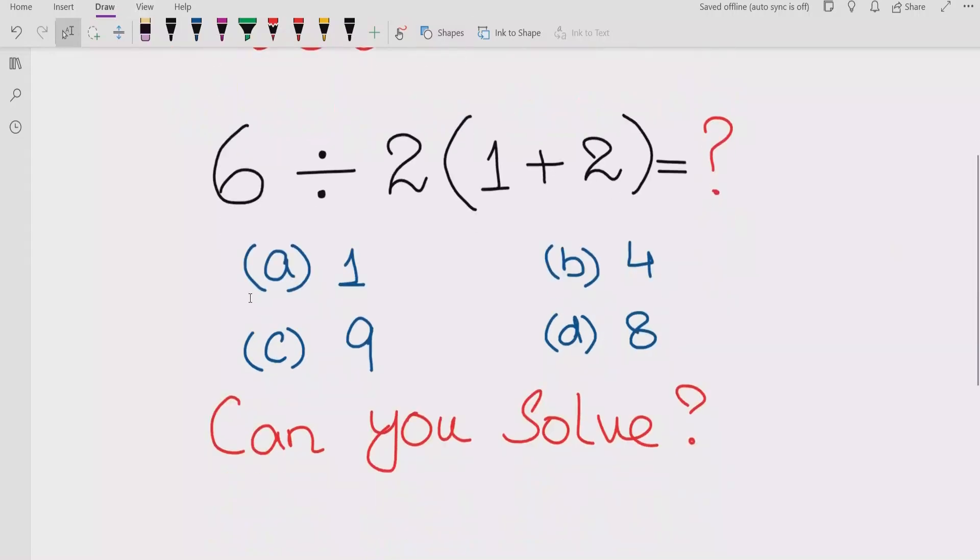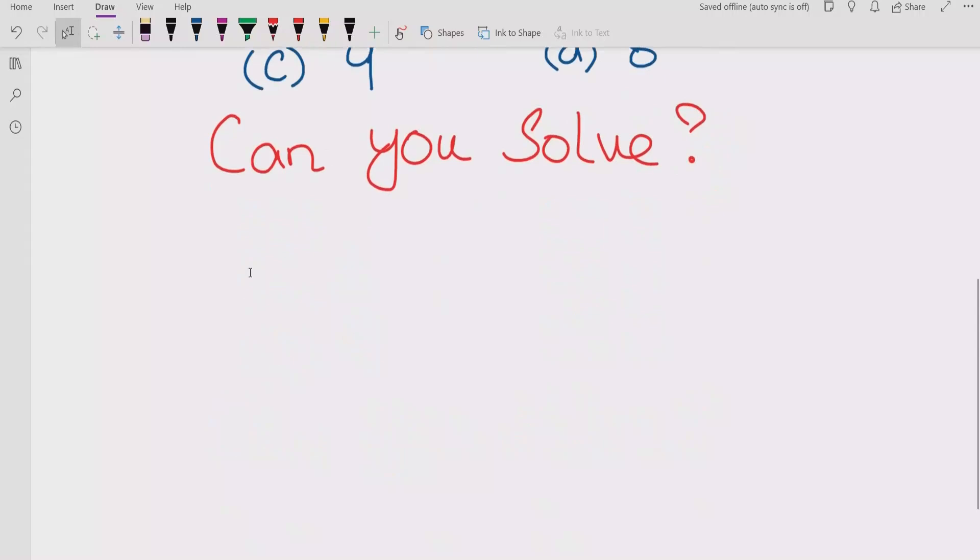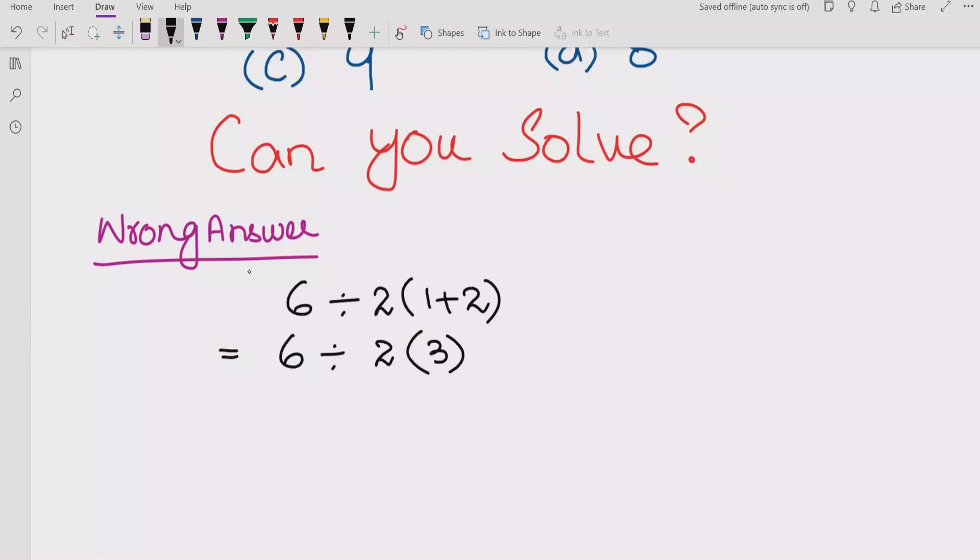We have a question: 6 divided by 2 multiplied by parenthesis 1 plus 2. So first we see how people solve wrongly. Students solve this way: first solve parenthesis, which is correct, 2 plus 1 is 3. And after that, they solve 2 multiplied by 3, which is 6.